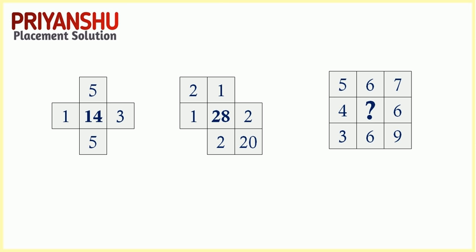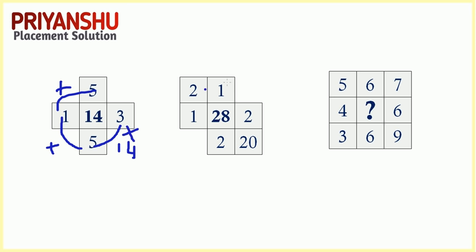Friends, please pause the screen and try this question by yourself, then continue watching. In this question, the logic is: the summation of all the outer elements needs to be placed in the inner element. For example: 5 plus 1 is 6, 6 plus 5 is 11, 11 plus 3 is 14. You need to add all the outer elements.